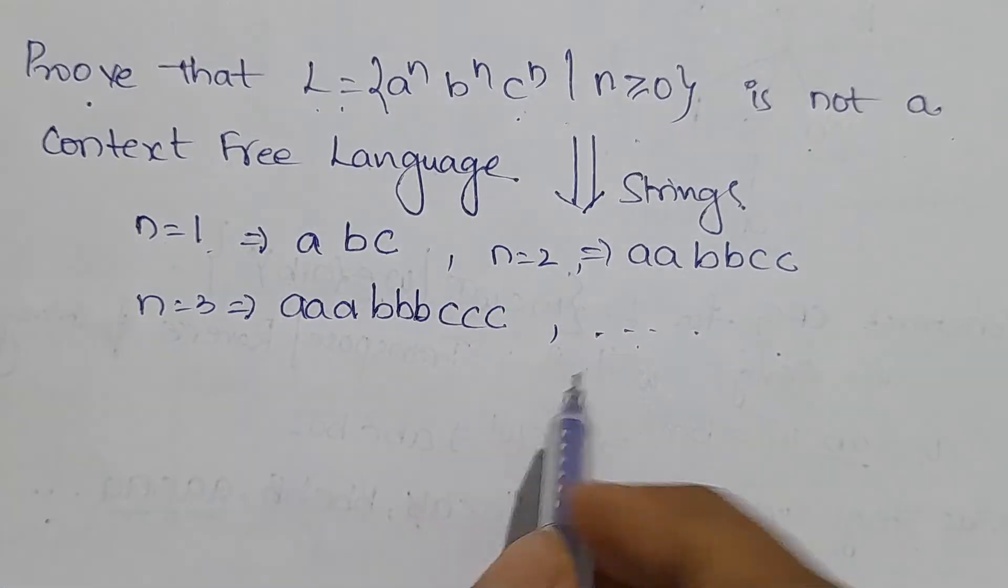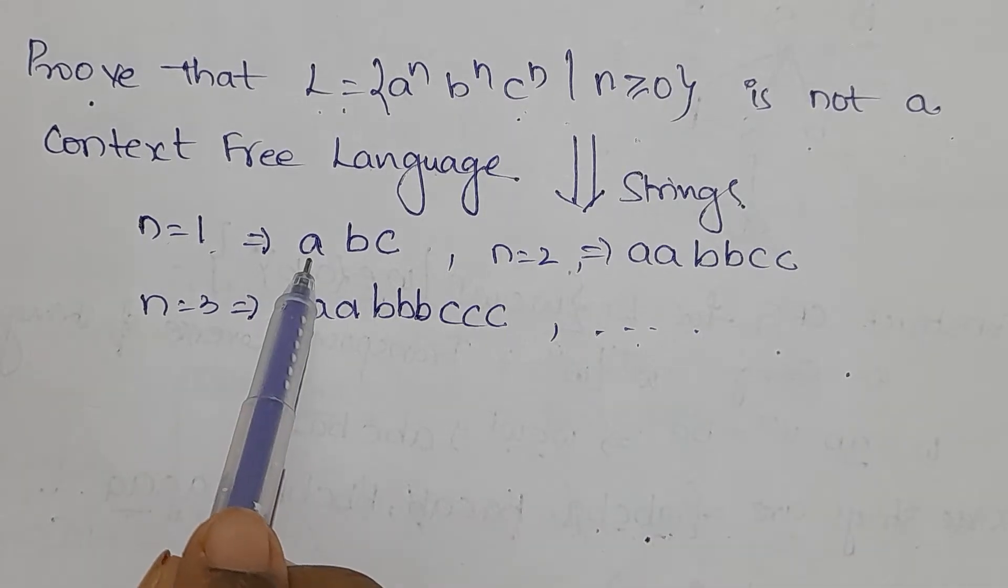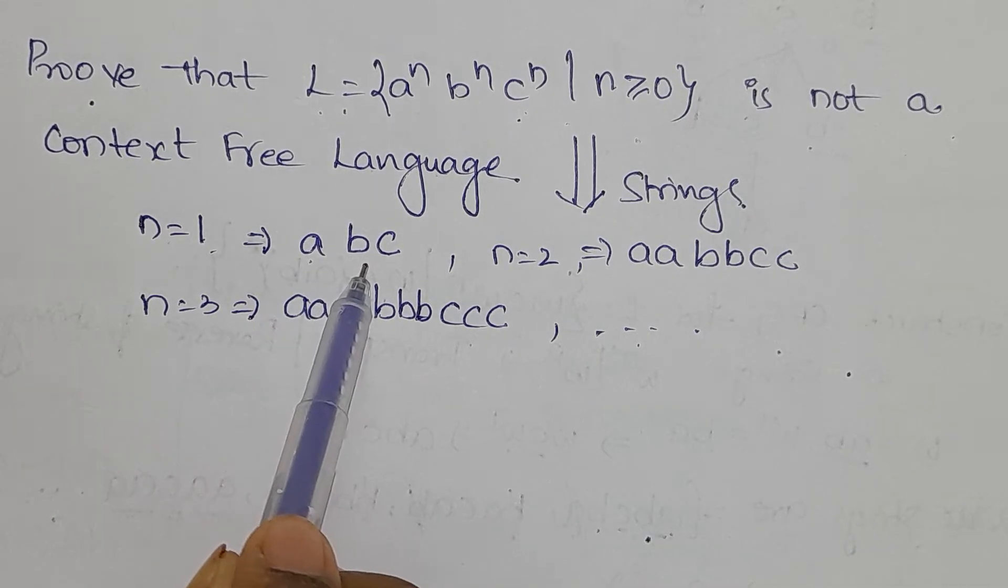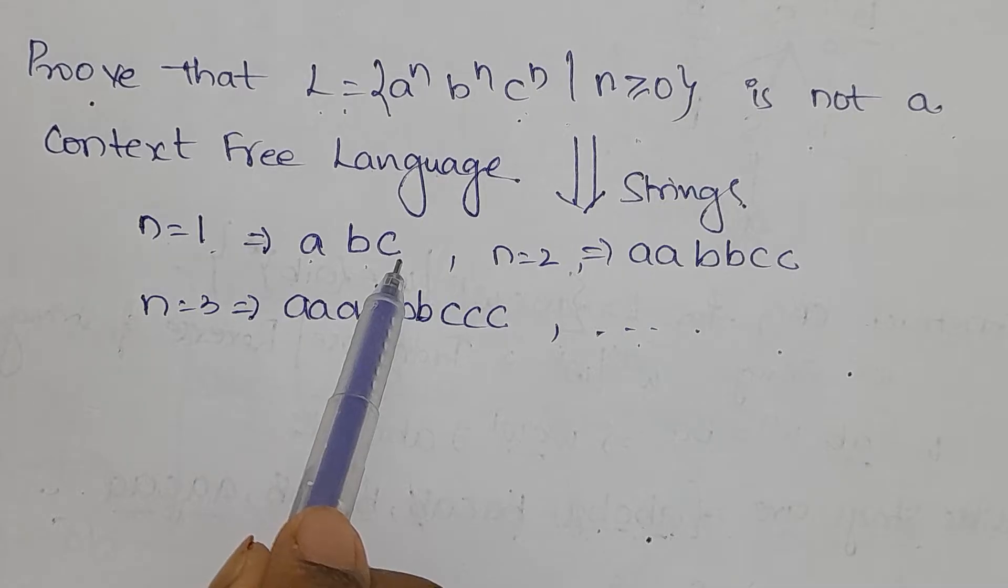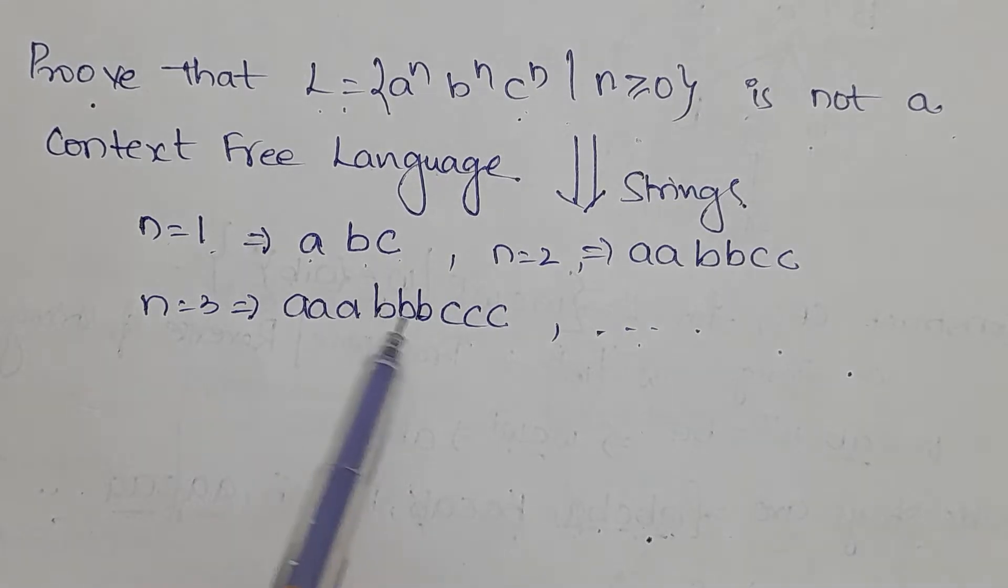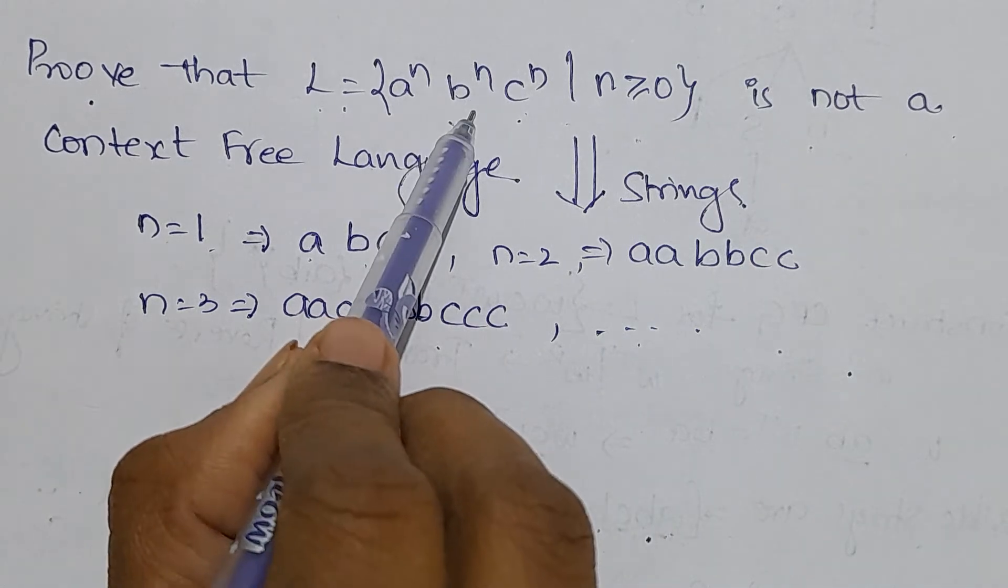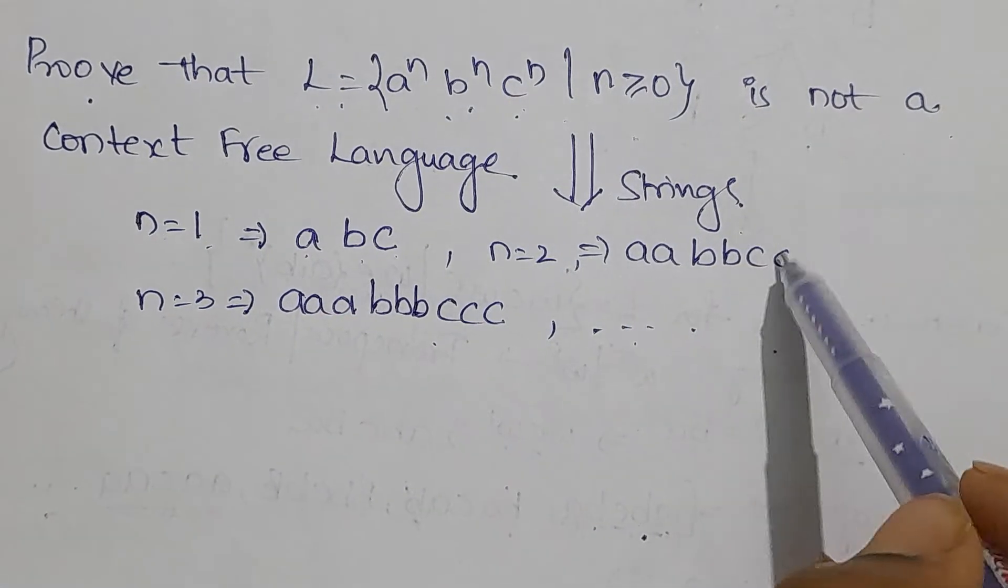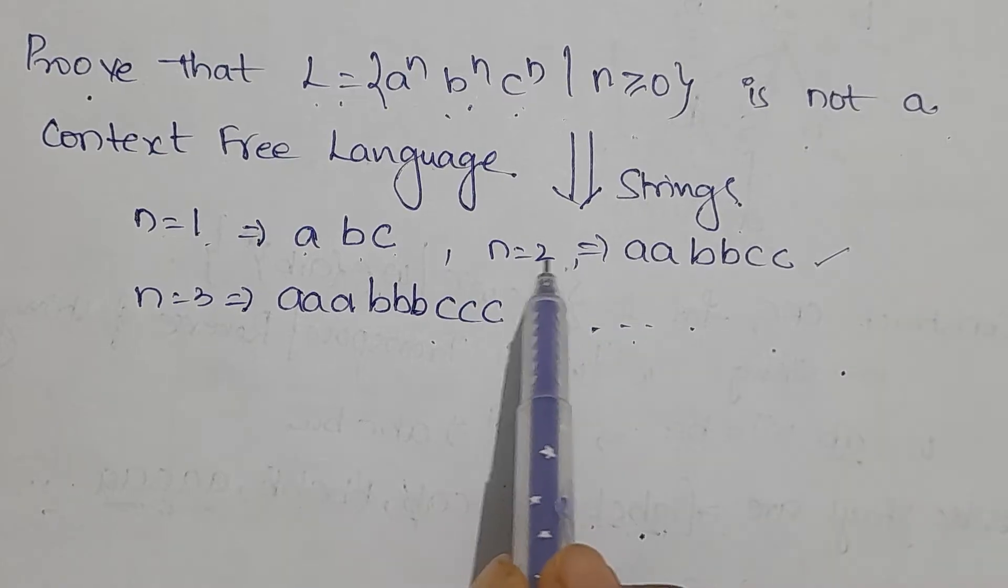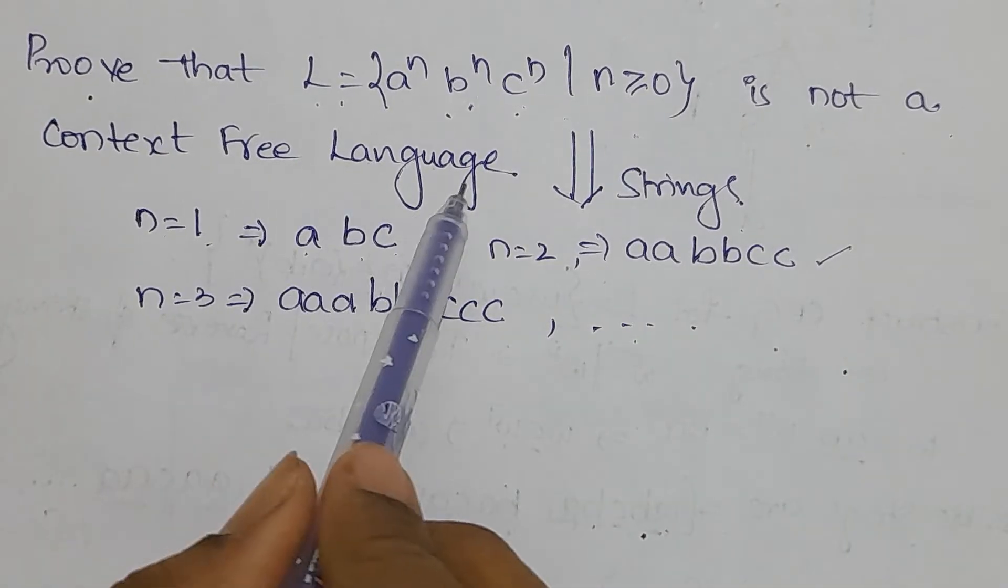The language rule gives us equal numbers of a's followed by b's followed by c's. We need to prove this language is not context-free.